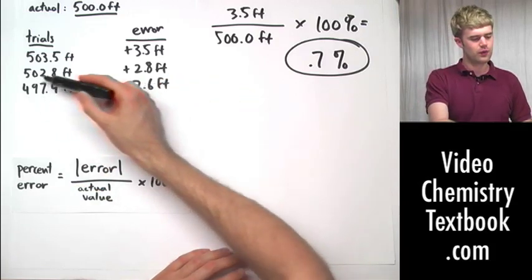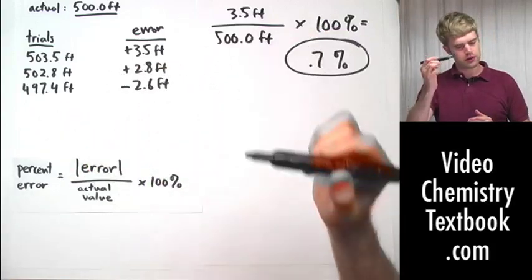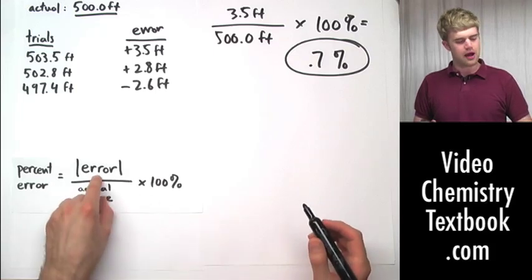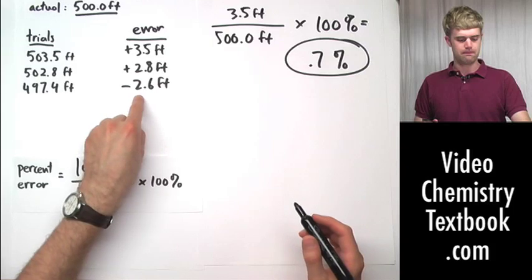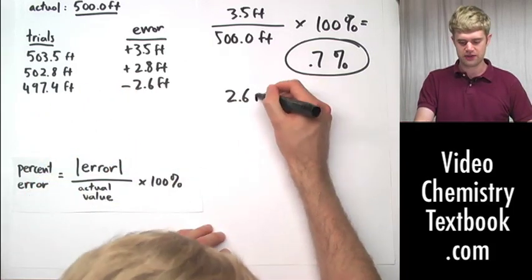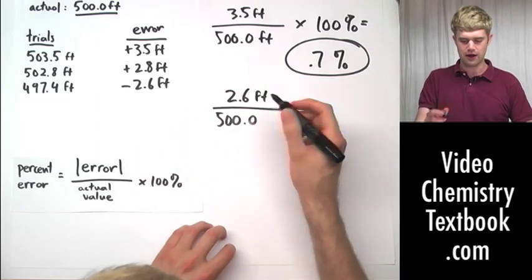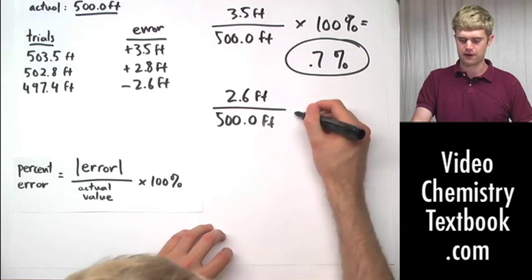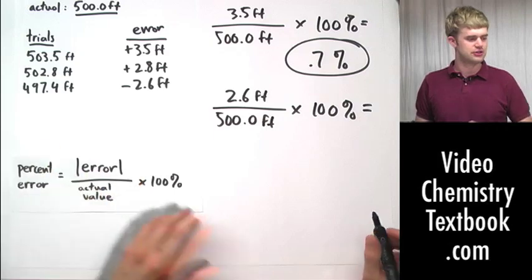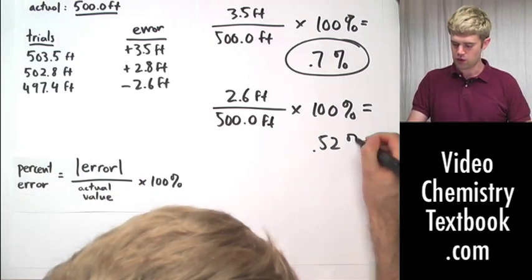Let's look at this next one. The error that we get for the third situation here. Now, the error here was minus 2.6. We're a little bit below the actual value. But remember, for percent error, we want to calculate the absolute value of the error. So with absolute value, we always make it positive. So it's going to be 2.6 feet. Don't worry that it's negative because it's the absolute value. Divide it again by the actual value, which is 500.0 feet. We're going to multiply that by 100%. And the answer that that's going to give us is 0.52%.